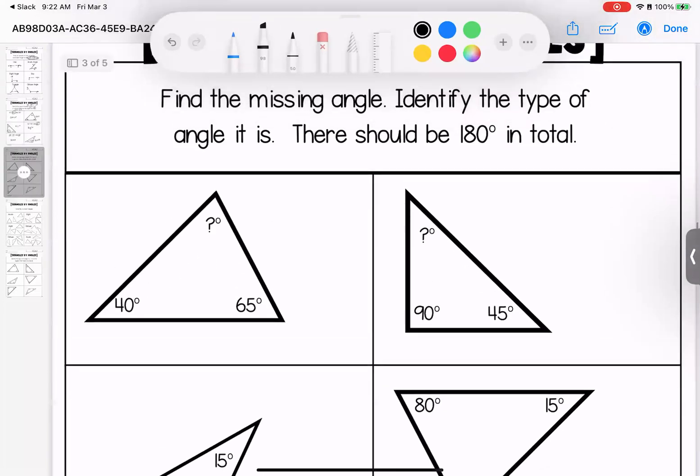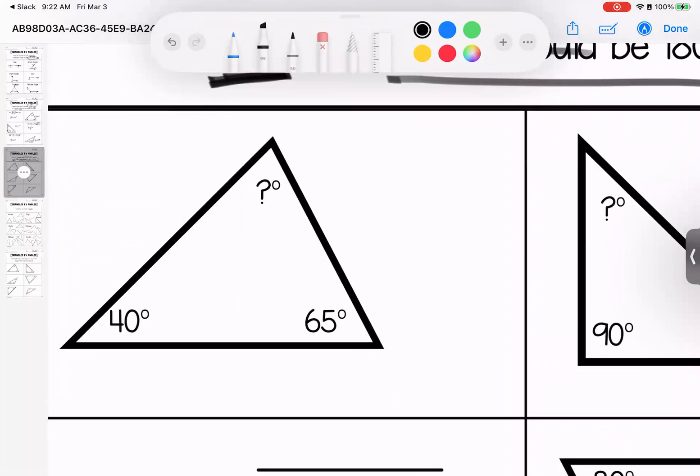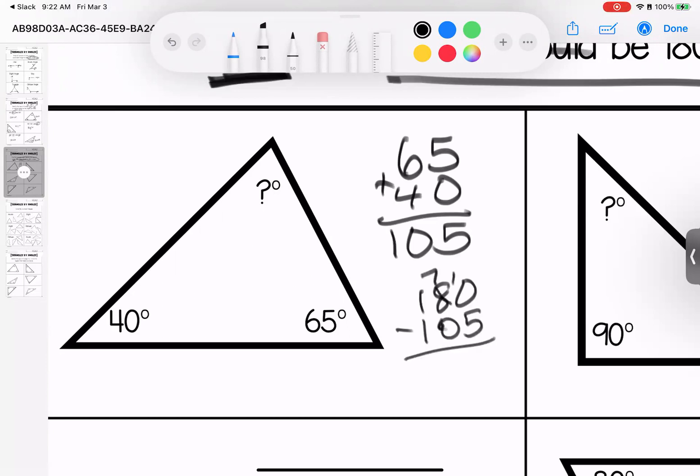All right, now we are looking for the missing angle. You're going to identify the type of angle that is missing. And remember, there should be a total of 180 degrees. So when we are solving these, we need to first add up the angles we are given. Once I do that, I need to subtract that from 180 degrees because that is how many total degrees I need in my triangle.